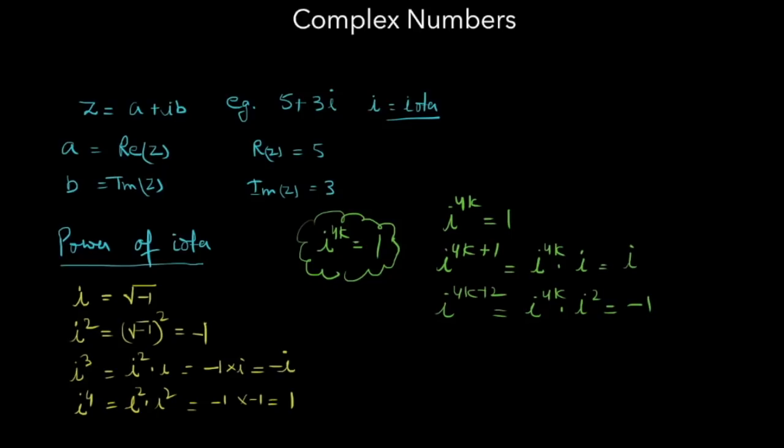iota 4k plus 3 equals iota 4k into iota cube, which equals minus iota.